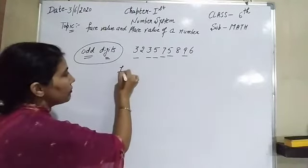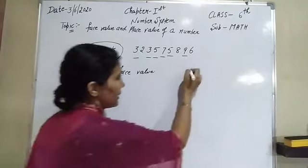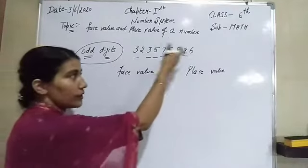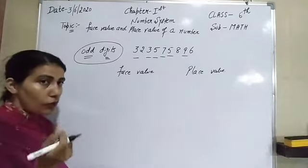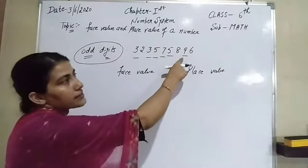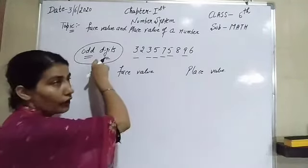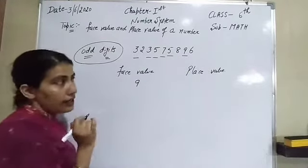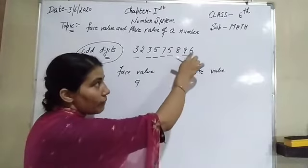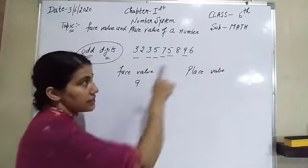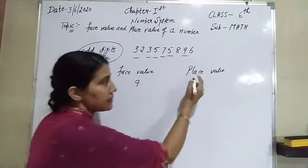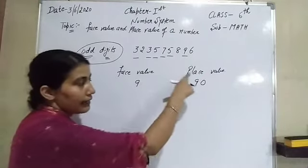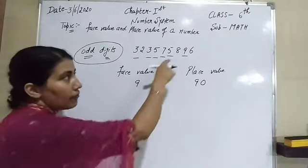Let's start from the last. Six is even, so skip it. Start from nine. Face value of nine is 9. For place value, count how many digits are there after nine — only one digit. So write one zero after nine: place value is 90. Eight is even, skip. Five is odd: face value is 5. There are three digits after five, so write three zeros — place value is 5000.